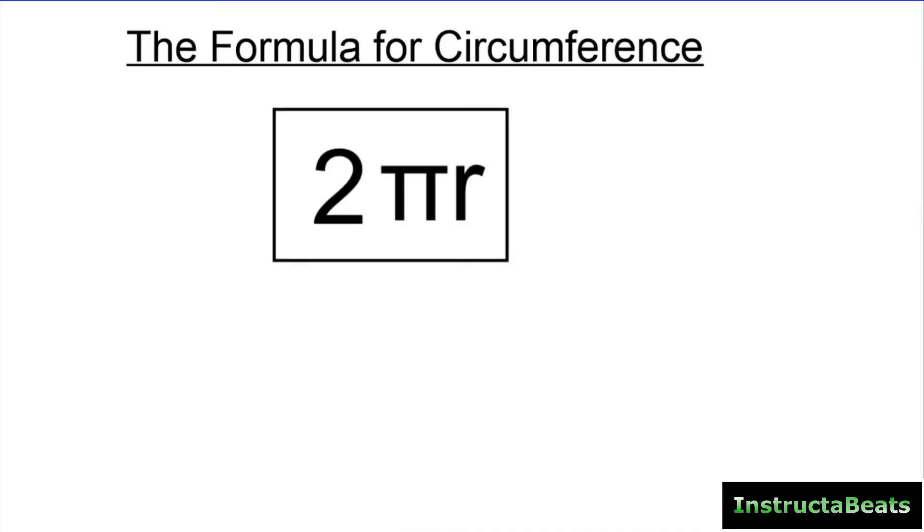So first of all, I'm going to give you the formula. The formula is 2 times pi times r. In other words, 2πr. This is how you find the circumference of a circle. If you figure this out, that will tell you the circumference.